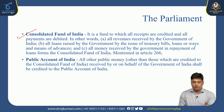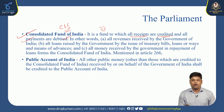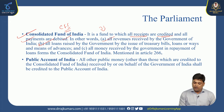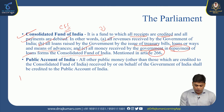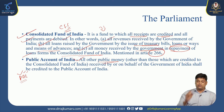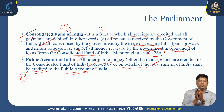The Consolidated Fund of India (CFI) is a fund to which all receipts are credited and all payments are debited. It is related to all revenues received by the government of India, all loans raised by the government through treasury bills, loans, or advances, and all money received in repayment of loans. This CFI is mentioned in article 266 of the Indian Constitution. Public Accounts of India (PAI) covers all other public money not credited to the CFI — received by or on behalf of the government of India.